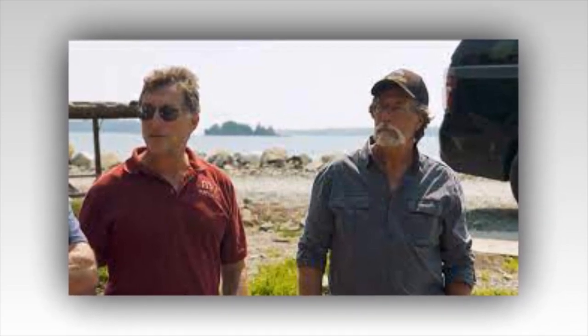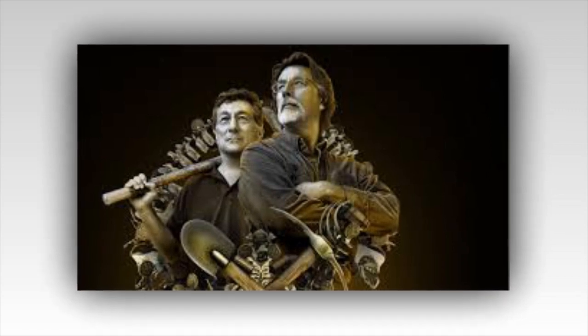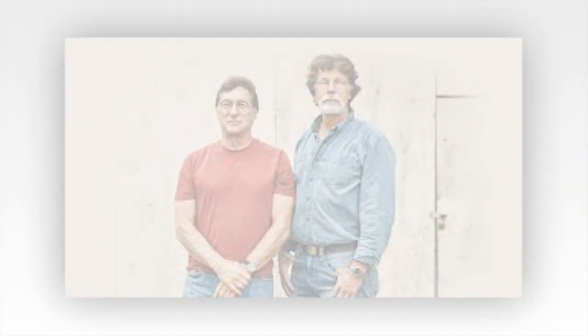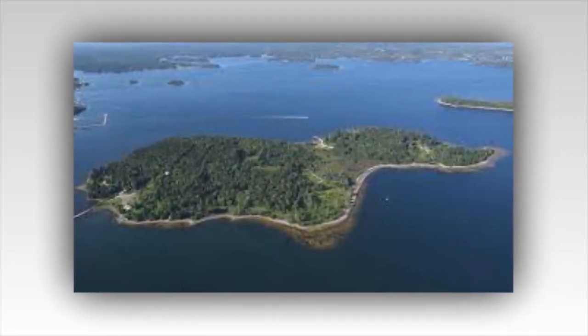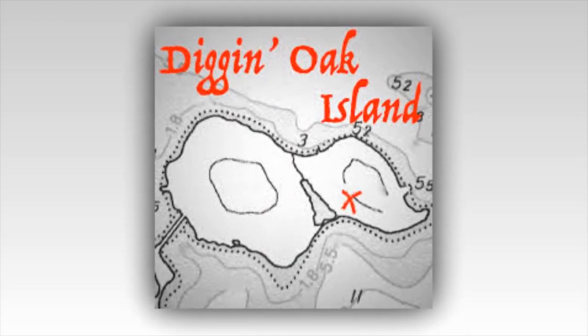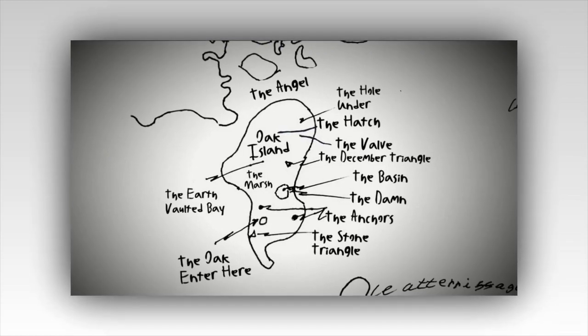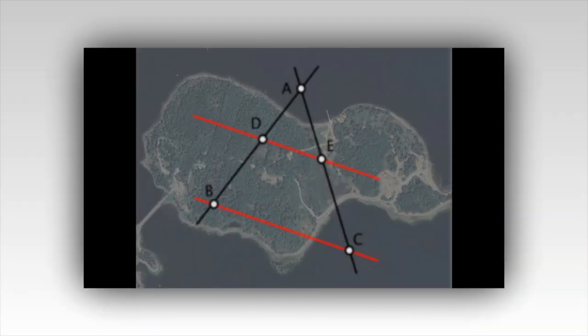In recent seasons, the Curse of Oak Island team has continued to explore leads suggested by the map, delving into its historical context and attempting to verify its claims through archaeology and technology. The quest has led them to uncover artifacts that, while not definitive proof of Templar activity, add layers of complexity to the island's history. Items such as ancient coins, tools, and even potential Templar markings have been unearthed, each piece adding to the mosaic of the island's enigmatic past. Moreover, the map has inspired viewers and amateur historians worldwide to engage with the Oak Island mystery, contributing their own theories and interpretations.